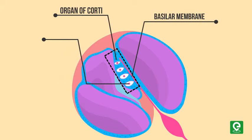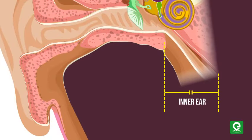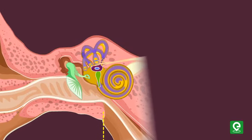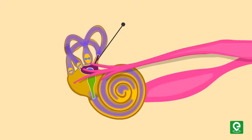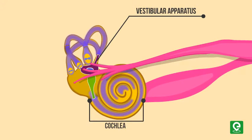The inner ear also contains a complex system called vestibular apparatus, located above the cochlea. The vestibular apparatus is composed of three semicircular canals and an otolith organ consisting of saccule and utricle.